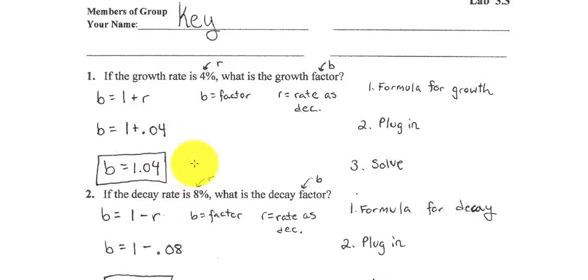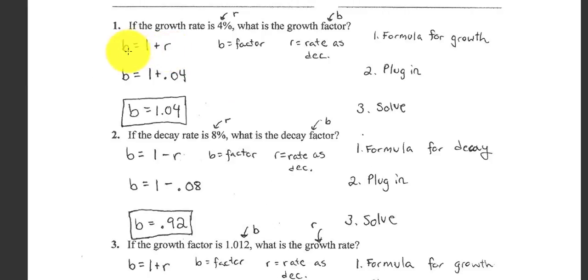So problems 1, 2, and 3 really just have us use this B equals 1 plus R or B equals 1 minus R. So if they give us R as 4%, we change 4% into a decimal. 1 plus the 4% is 1.04 for our B. Growth factor is 1.04. Growth rate is 4%.